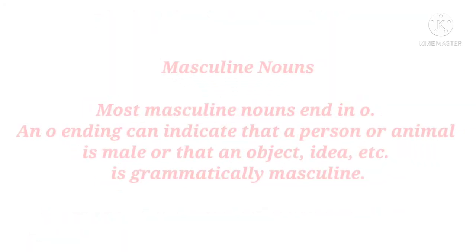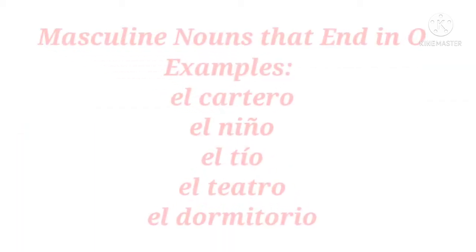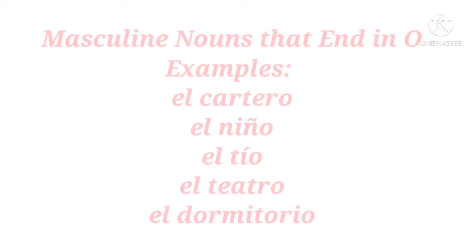Masculine nouns. Most masculine nouns end in O. An O ending can indicate that a person or animal is male, or that an object, idea, etc. is grammatically masculine. Masculine nouns that end in O. Examples: el cartero, el niño, el tío, el teatro, and el dormitorio.